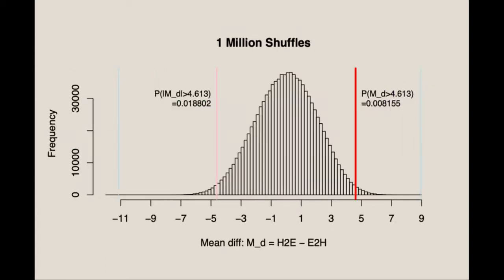From here we can see where our actual data falls. More importantly, we can see that we would only obtain a mean difference, at least the size of ours, 0.8% of the time. That is if the null hypothesis is true.